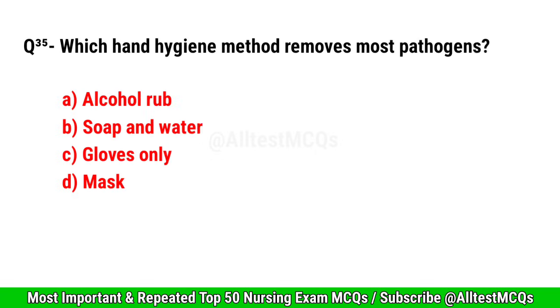Question No. 35. Which hand hygiene method removes the most pathogens? Correct option is B. Soap and water.